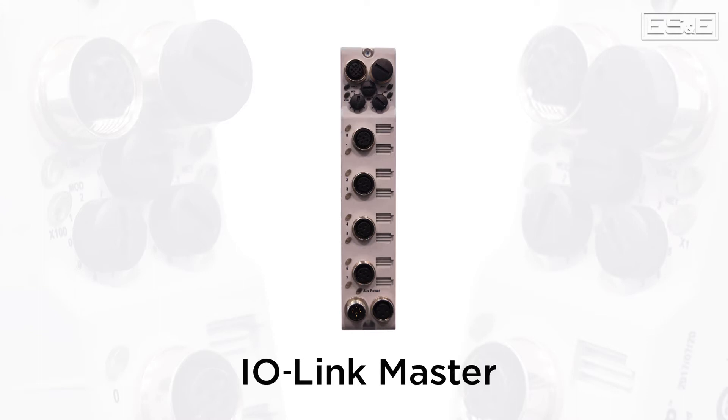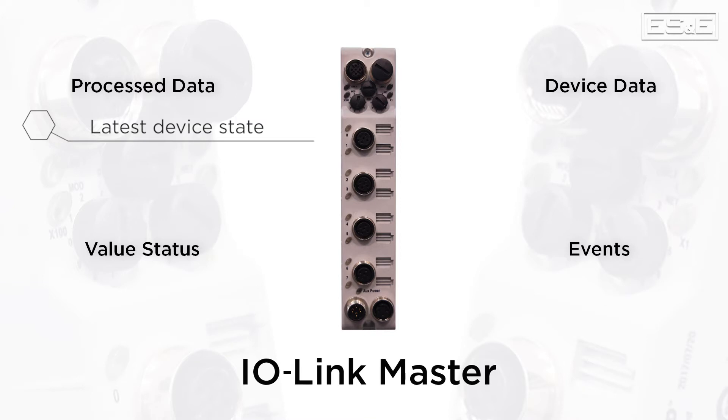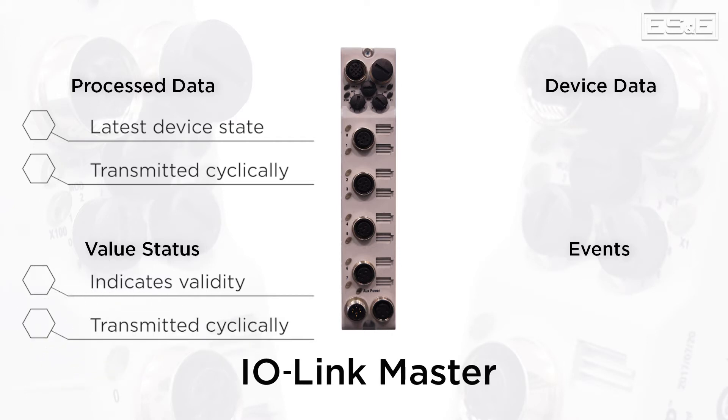IO-Link devices have four types of transmission: process data, value status, device data, and events. The process data is the latest state of the sensor or actuator, such as the speed. Process data is transmitted cyclically, which means it is set automatically at a regularly defined interval, which is defined by the PLC. The value status indicates whether the process data is valid or invalid and is transmitted with the process data cyclically.